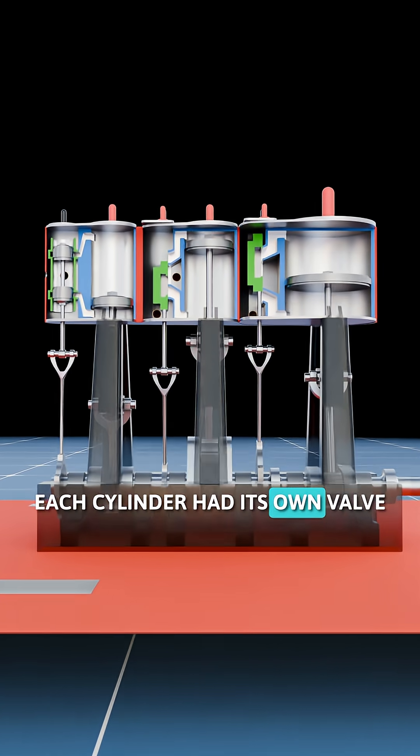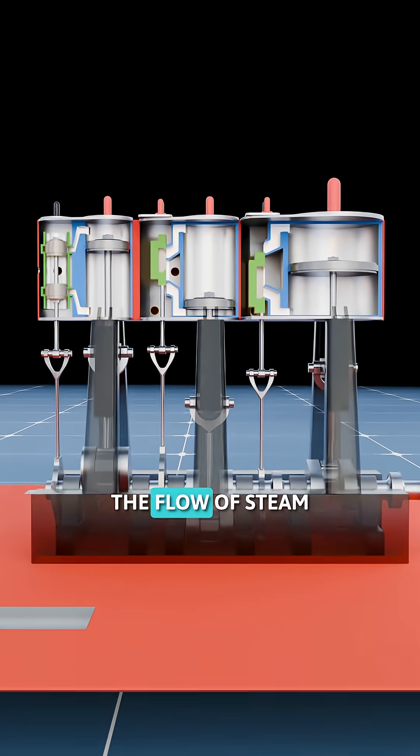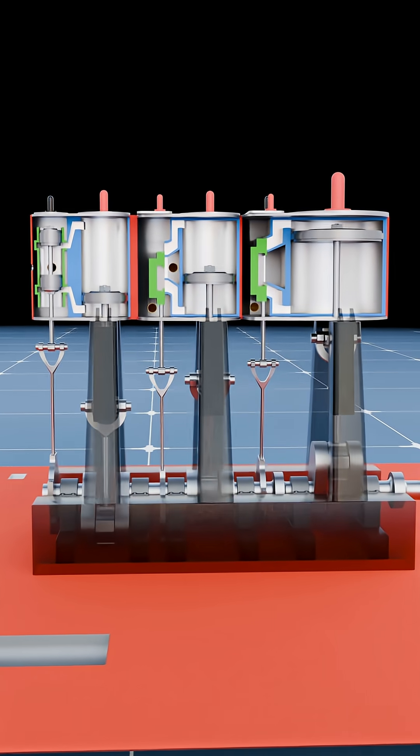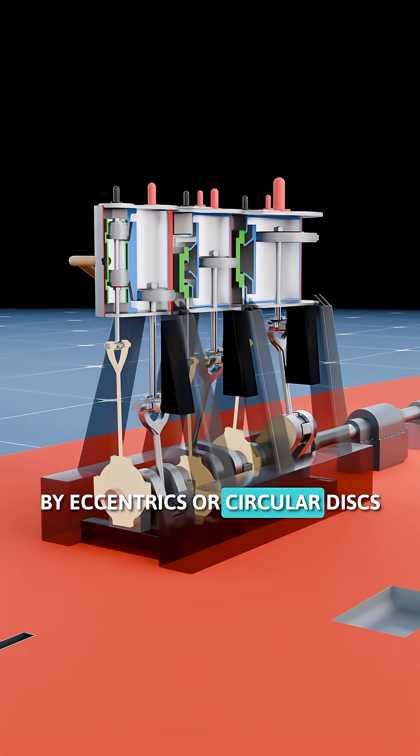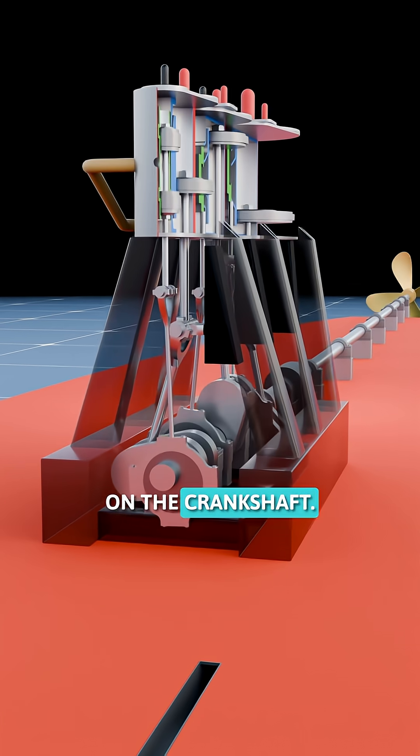Each cylinder had its own valve that controlled the flow of steam in and out by moving up and down. These valves were operated by rods driven by eccentrics, or circular discs, mounted off-center on the crankshaft.